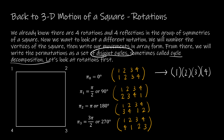For 90 degrees, 1 maps to 2 — I can't close it yet because I haven't returned to 1. Then 2 maps to 3, 3 maps to 4, 4 maps back to 1, so now I close it. This gives one four-cycle, compared to the four one-cycles we had for zero degrees.